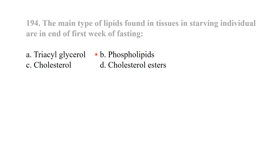MCQ 189: The main type of lipids found in tissues of a starving individual — in the end of the first week of fasting, the person is in a starving condition, and in this state, free fatty acids are the main lipids formed.